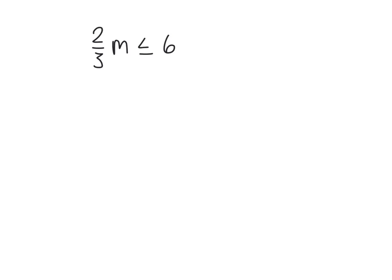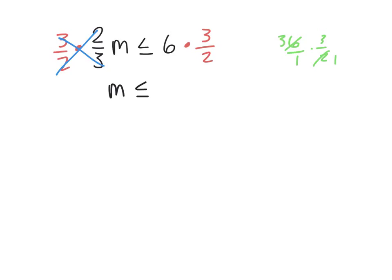In case it's been a while since you've solved equations with fractions: when that coefficient is a fraction, our strategy is to multiply by the reciprocal. Instead of dividing by 2/3, we're going to multiply both sides by the reciprocal of 2/3, which is 3/2. These cancel to 1. Multiplying the right side: 6 over 1 times 3 over 2 — we can cross-cancel the 6 and the 2, giving 3 over 1 times 3 over 1, which equals 9.